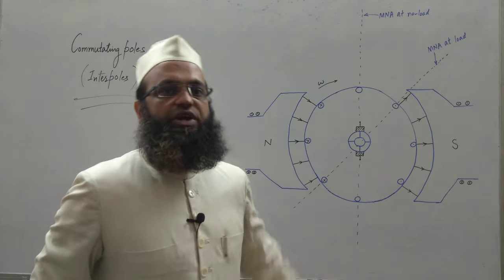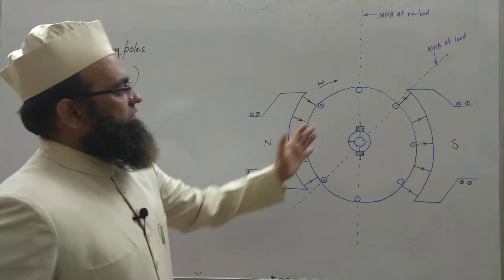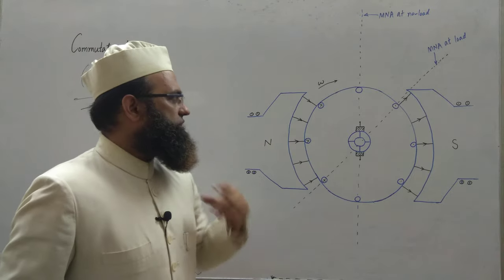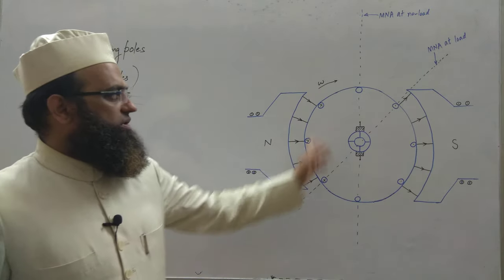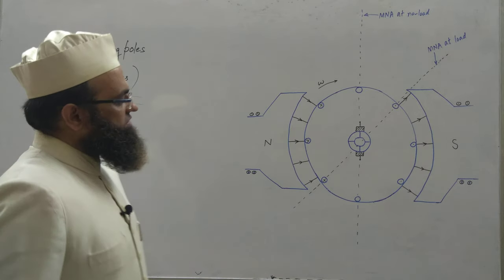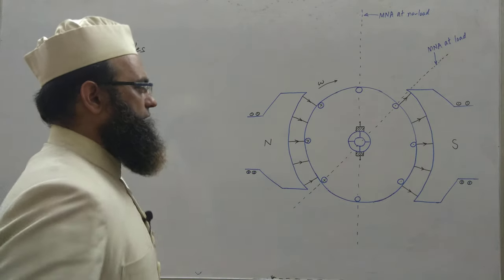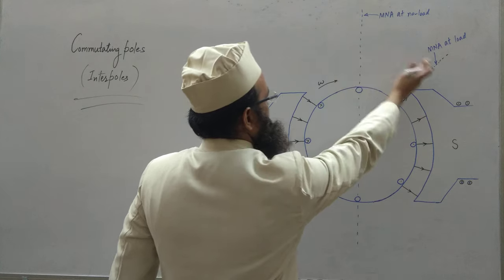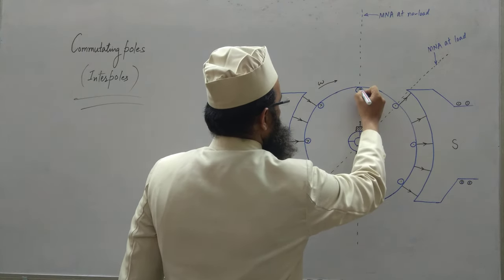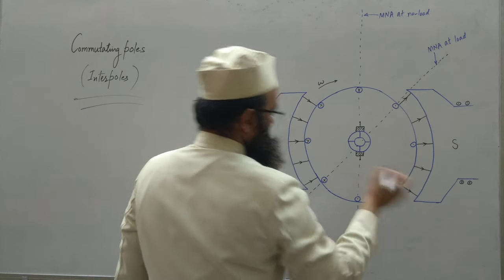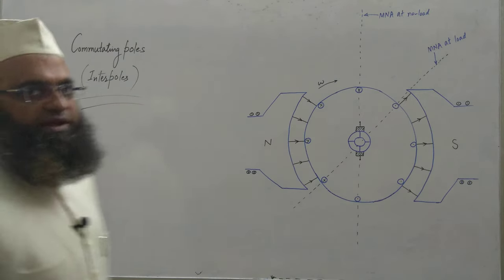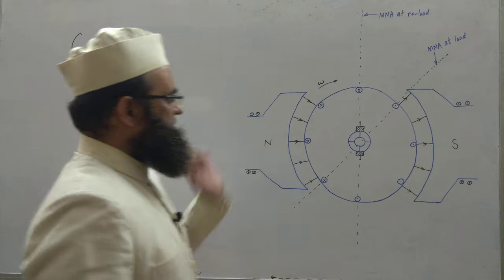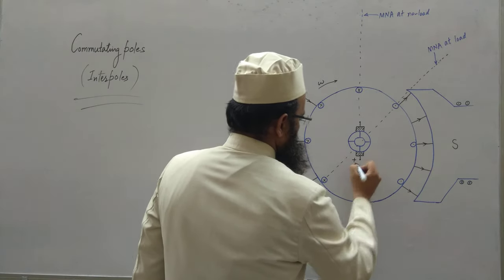Let us take the case of generating mode where this DC machine is working as a DC generator. This is the direction of rotation of the prime mover, that is the rotor or armature conductors. The EMF induced will be as shown, and as soon as the generator is loaded, the MNA will shift. The EMF induced in the coils undergoing commutation will have this polarity, and hence sparking will occur when we have our brushes along this axis.